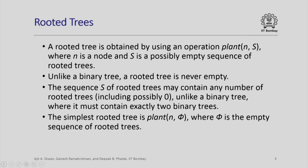We look at one general class of trees called rooted trees. Similar to a binary tree, we again have a single operation called plant(n, s) where n is a node, but now instead of just having two trees left and right, we have a sequence of rooted trees f. A rooted tree is obtained by taking a node n and any sequence of rooted trees s. Since rooted trees is also a type, we can take a sequence of that type and plant it with node n to get another rooted tree.